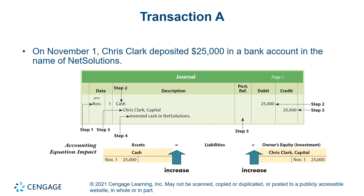How do we record these transactions into a journal? Step 1: the date of the transaction is entered in the date column. Step 2: the title of the account to be debited — cash in this case — is recorded in the left-hand margin under the description column, and the amount to be debited is entered in the debit column. The title of the account to be credited, capital, is listed below and to the right of the debited account title, and the amount to be credited is entered in the credit column.